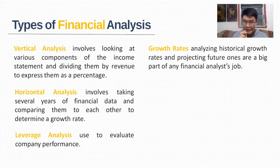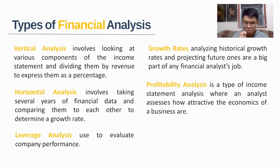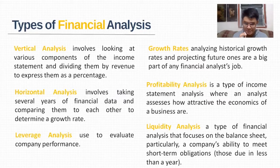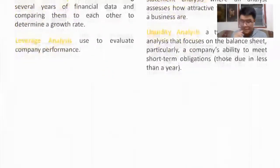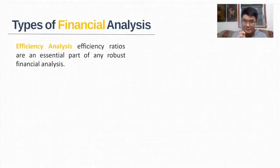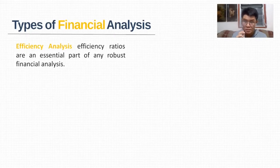Leverage ratios are one of the most common methods analysts use to evaluate company performance. A single financial metric like total debt may not be that insightful on its own, so it's helpful to compare it to a company's total equity to get a full picture of the capital structure. Next is growth rates — analyzing historical growth rates and projecting future ones are a big part of any financial analysis job. Profitability analysis is a type of income statement analysis where analysts assess how attractive the economics of a business are. Liquidity analysis focuses on the balance sheet, particularly a company's ability to meet short-term obligations due in less than a year. Efficiency ratios look at how well a company manages its assets and uses them to generate revenue and cash flow.